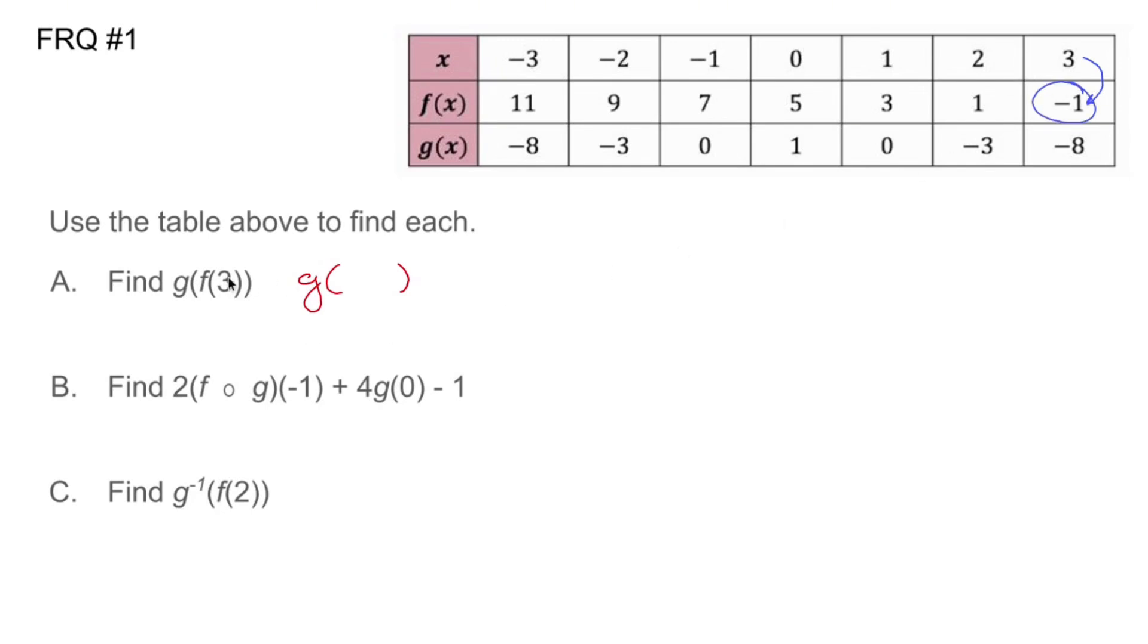So f of three is negative one. Now that I have negative one, I need to find g of negative one. We do the same thing, go to our table and go to where you have negative one, and g of negative one is going to be zero.